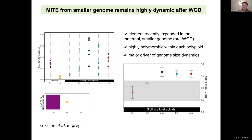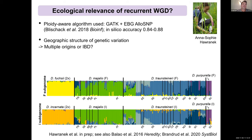Going back to the question of ecological relevance of recurrent whole genome duplication: we have several polyploids, and we can investigate patterns of gene flow to infer if they will collapse into the same species or maintain independence. One of my master's students, Anna-Sophie Haronek, is working with RAD sequencing data across a large sample of three polyploids — Majalis, Traunsteineri, and Purpurella. Purpurella is one of the youngest polyploids, Majalis is the oldest, and Traunsteineri is middle-aged.